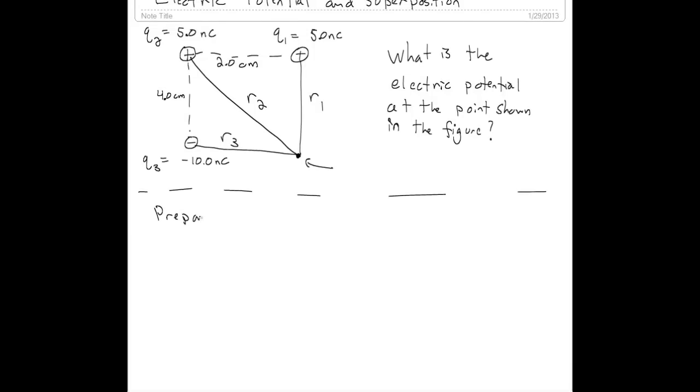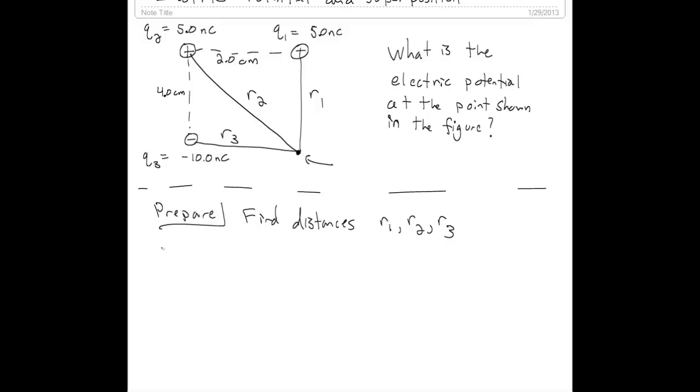The first step in preparing to solve this problem is finding the distances R1, R2, and R3. From our figure, that shouldn't be too hard. R1 is just four centimeters. R2 is the length of the hypotenuse of a triangle, so we can use the Pythagorean theorem to find that, and we get 4.47 times 10 to the negative 2 meters. R3 is just 2 centimeters.